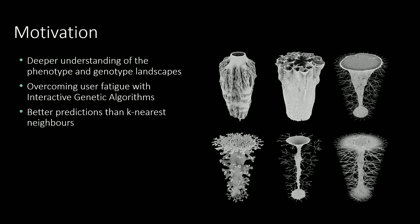Our particular motivations for this work are: first, can we use dimensionality reduction and deep learning methods to assist artists in understanding complex search spaces and explore new undiscovered territory? Second, one of the main problems identified with interactive genetic algorithms is user fatigue — putting results into categories could be valuable when finding transition points, but categorising hundreds or thousands of samples is very fatiguing. And finally, can these methods provide better predictions than the k-nearest neighbour methods that Species Explorer has been using so far?